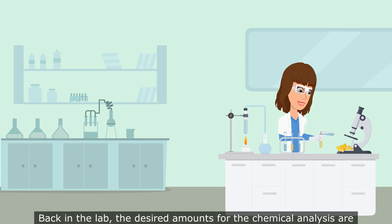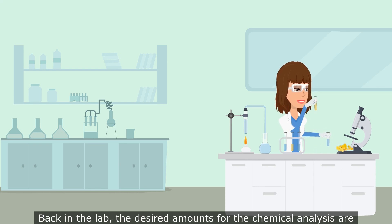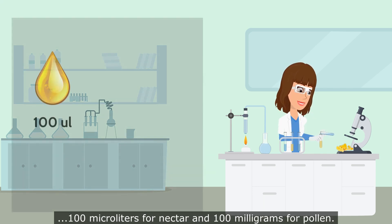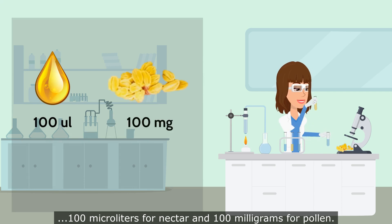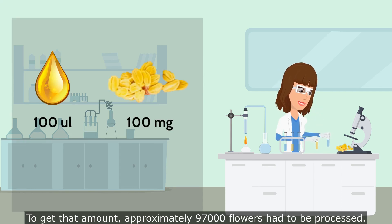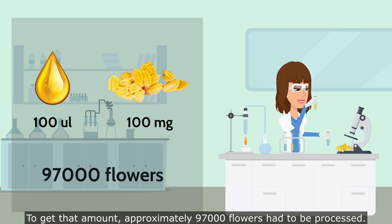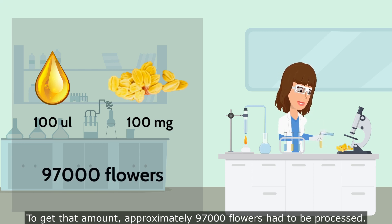Back in the lab, the desired amounts for the chemical analyses are 100 microliters per nectar and 100 milligrams for pollen. To get that amount, approximately 97,000 flowers had to be processed.